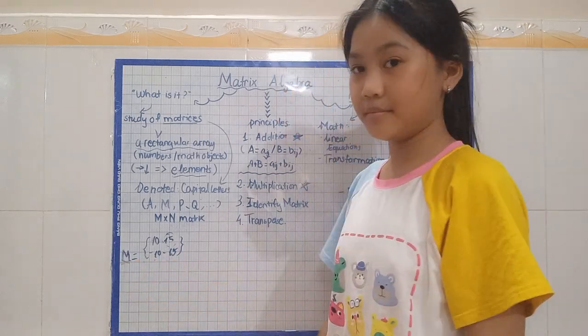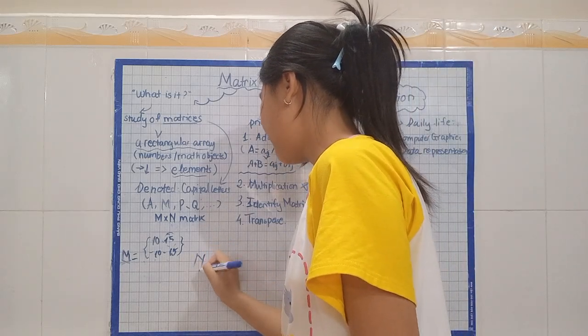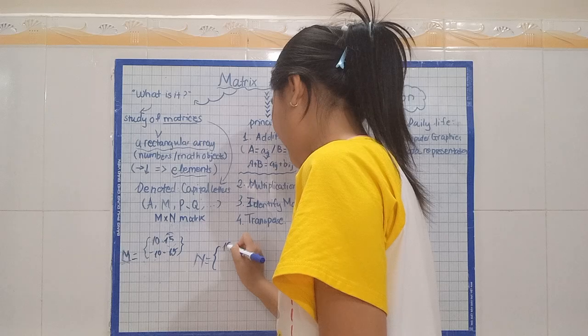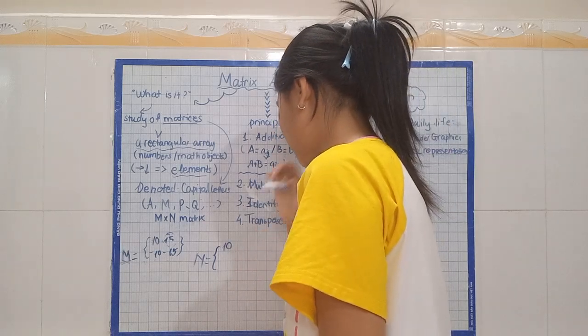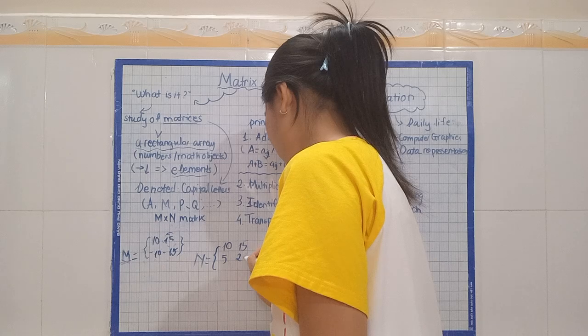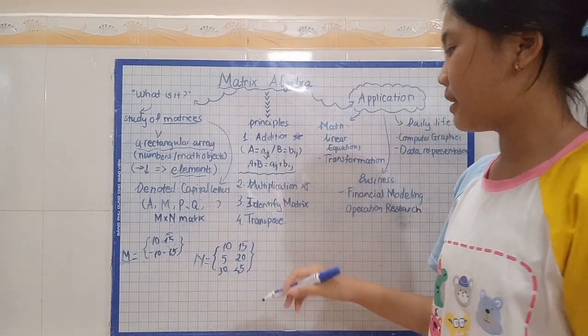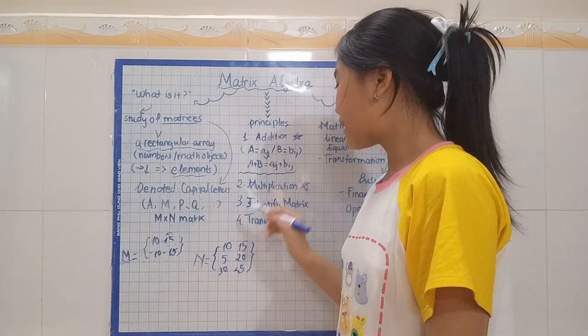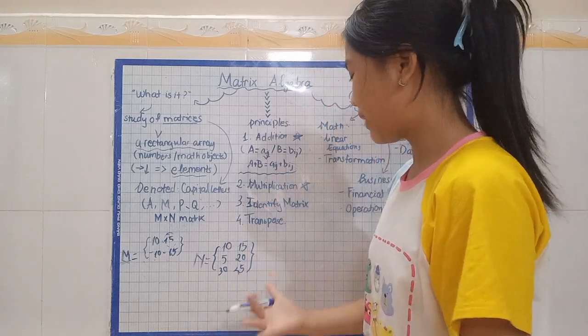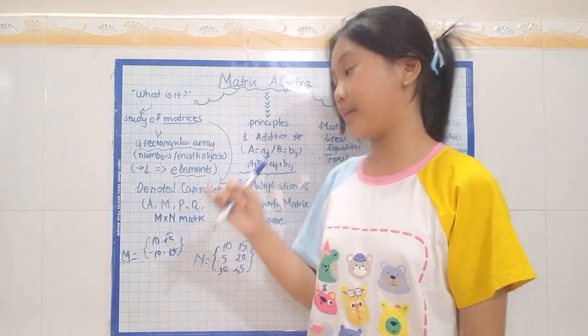Multiplication is defined when the number of columns is the same as the number of rows for the other matrix. Let's say here is our first matrix. It has two rows and two columns.